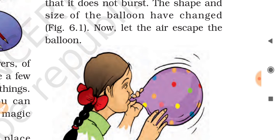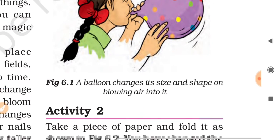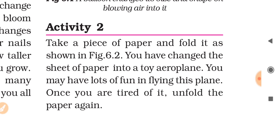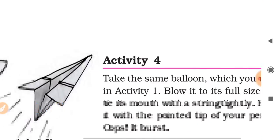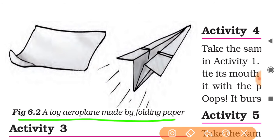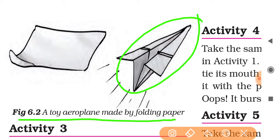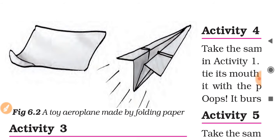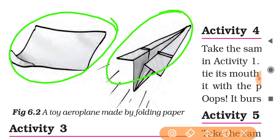When the air escapes from the balloon, it comes back to its original state. For activity two, take a piece of paper and fold it as shown in figure 6.2. You have changed the sheet of paper into a toy aeroplane — you may have lots of fun flying this plane. Once you are tired of it, unfold the paper again. You can get this paper back to its original form if you unfold the airplane.